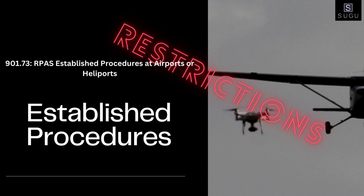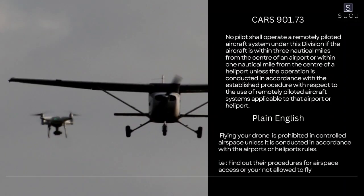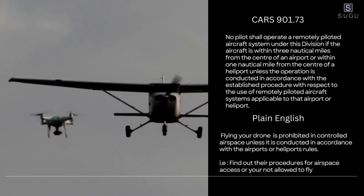CARS 901.73 states no pilot shall operate a remotely piloted aircraft system under this division if the aircraft is within three nautical miles from the center of an airport, or within one nautical mile from the center of a heliport, unless the operation is conducted in accordance with the established procedure with respect to the use of remotely piloted aircraft systems applicable to that airport or heliport.